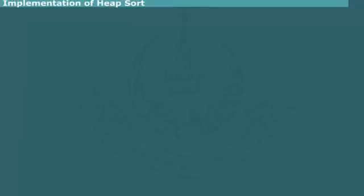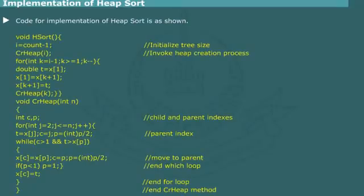Implementation of heap sort. The code for implementation of heap sort procedure is shown in figure. It contains two methods named hsort and crheap. The function hsort is called by the user program. It sets the size of array.